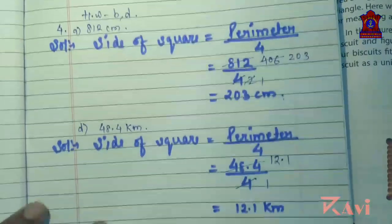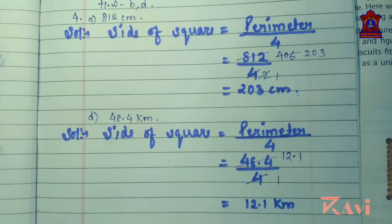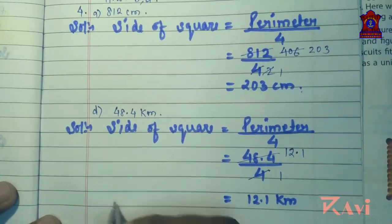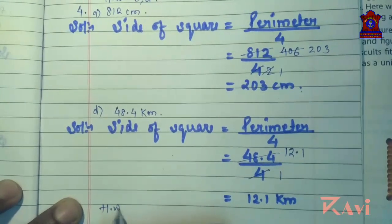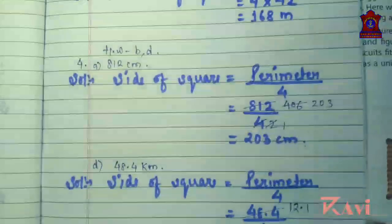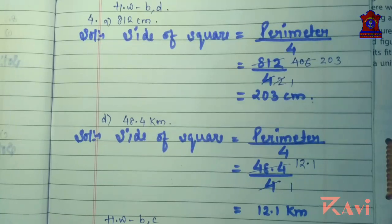Like this you can find the other two questions by yourself — homework is question B and C. Today we covered up to question number 4, and in the next class we will do from question number 5 onwards. Complete up to question number 4, and if you have any doubts we will discuss them in the online class. Thank you.